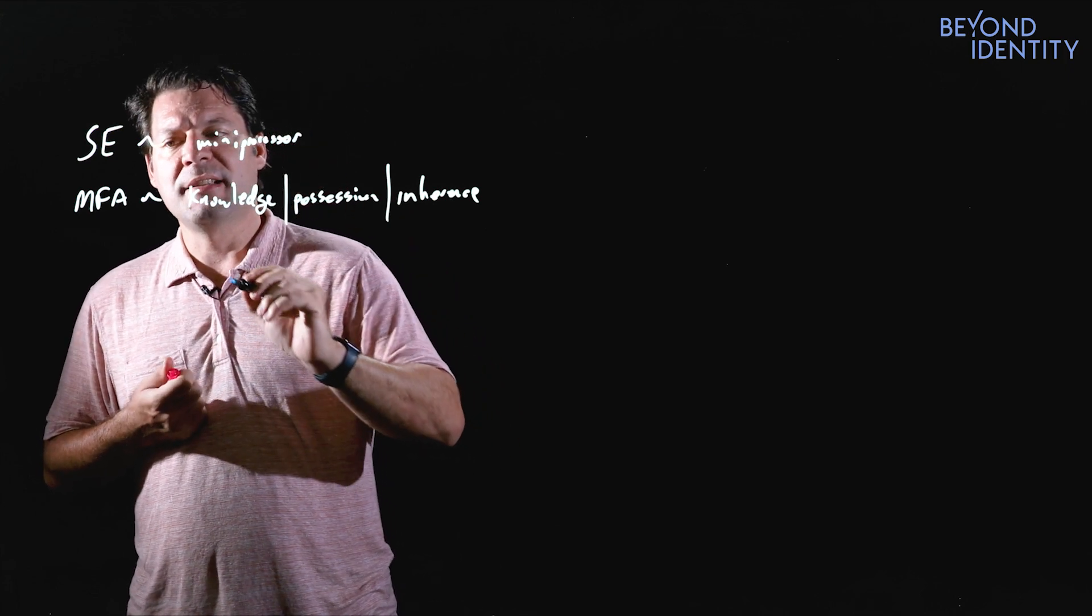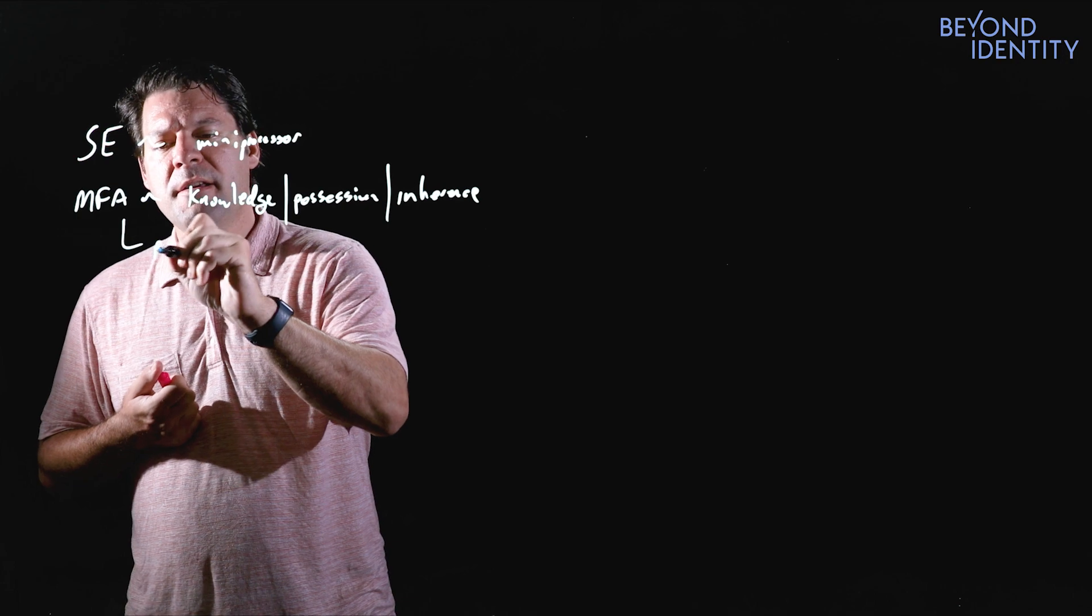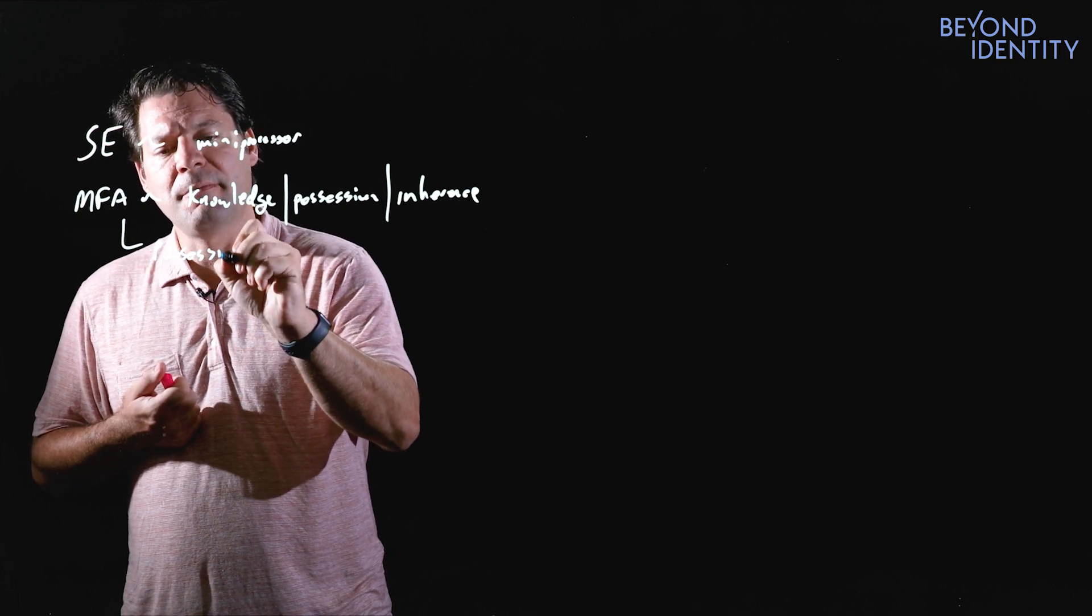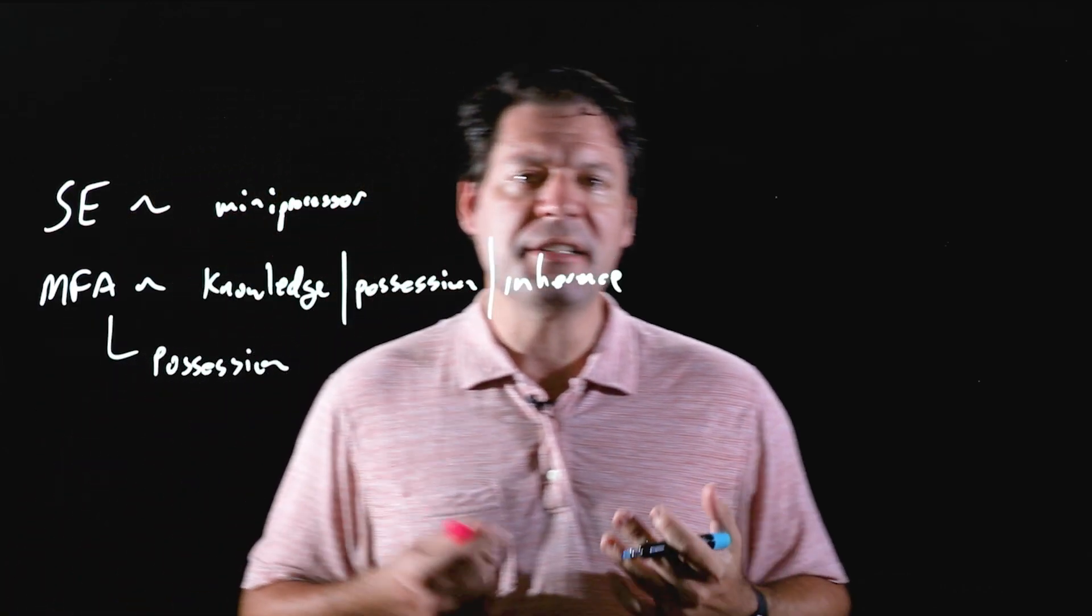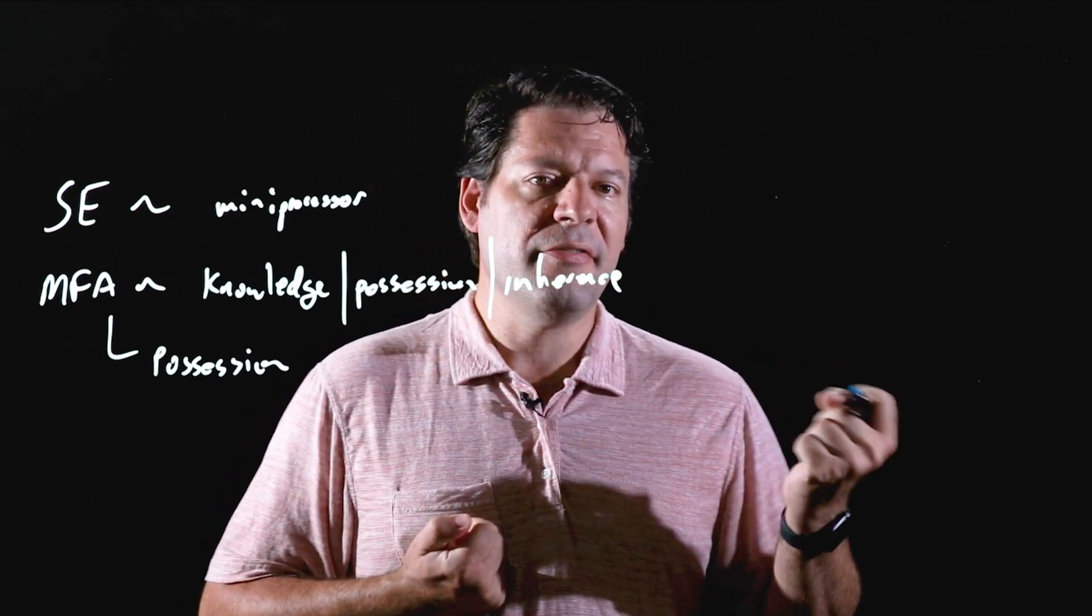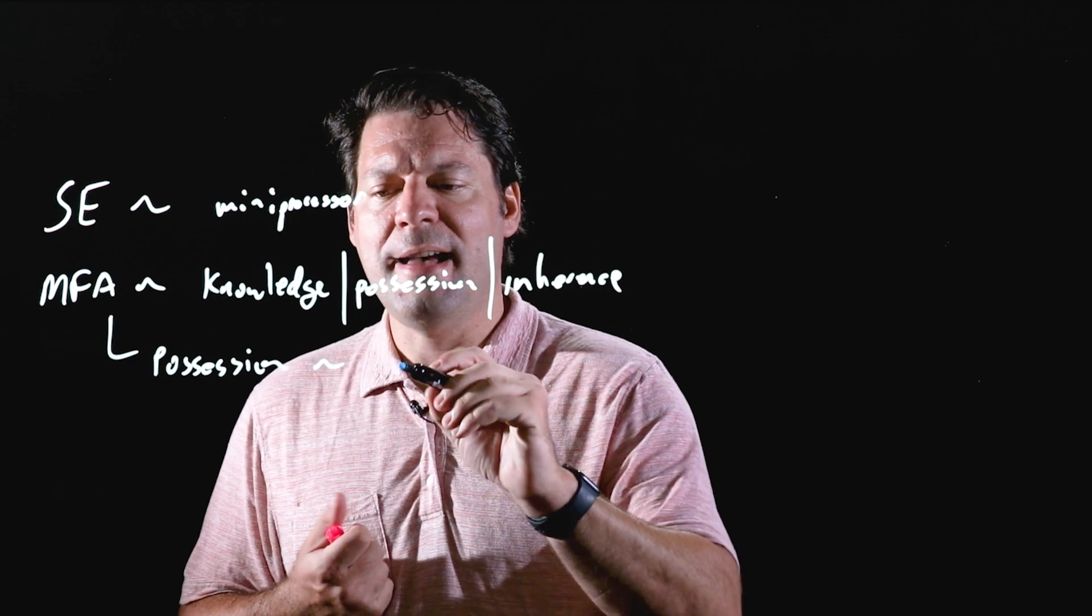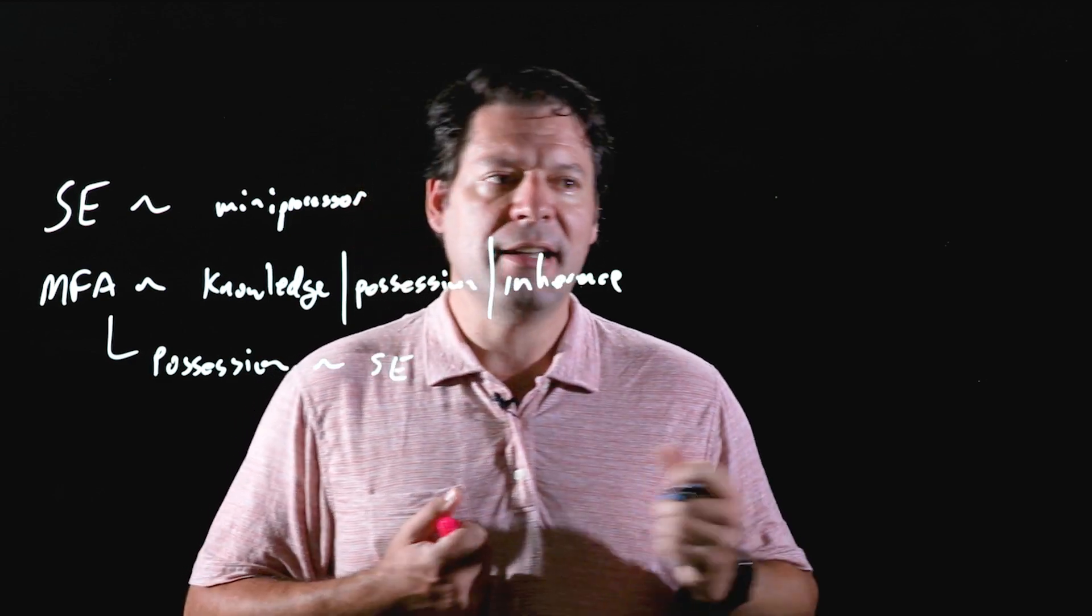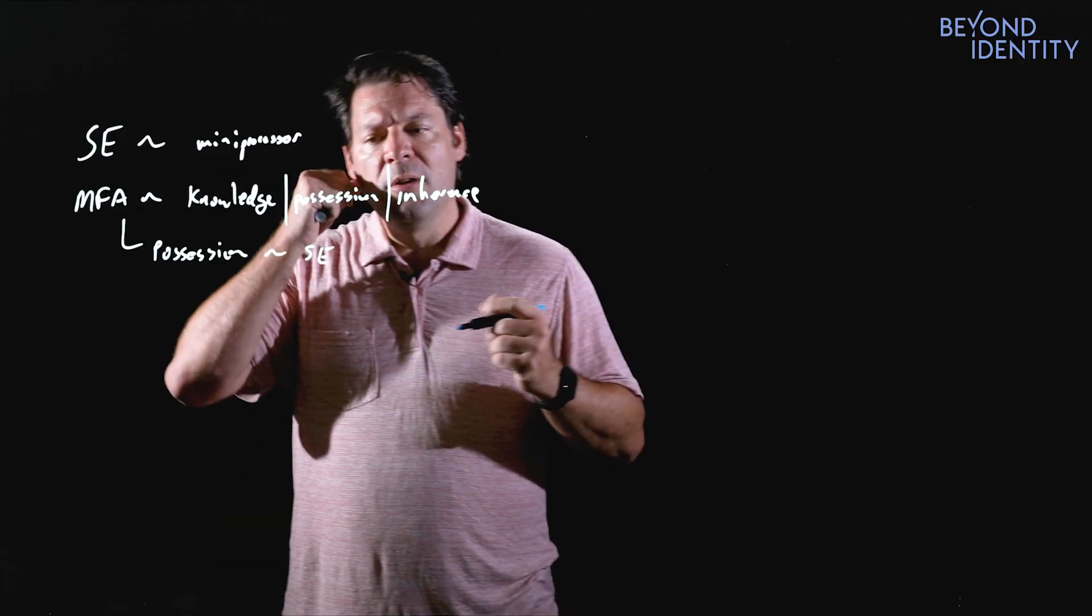So let's start with possession because that's kind of the most obvious. In terms of a possession, if I'm using a secure enclave with a key that's physically locked in the enclave, then only if I possess that enclave can I actually use that key. So what does that actually mean?